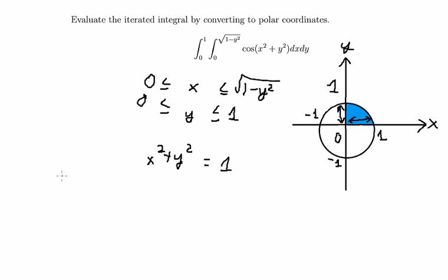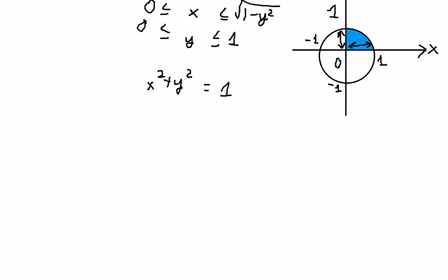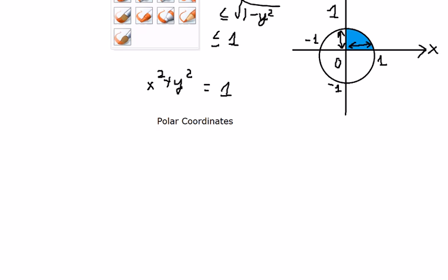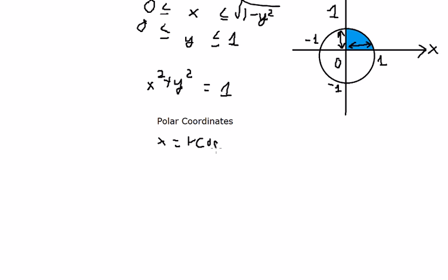So we can change to polar coordinates. We got x equals r cosine theta, y equals r sine theta.